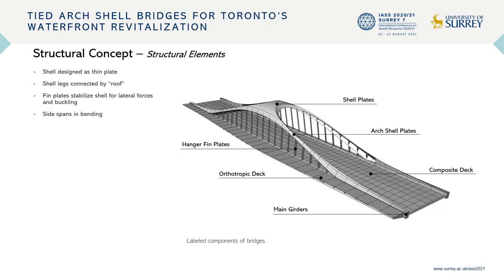Here you see the elements of the bridge. As mentioned, you have the shell itself in compression, with the two sides linked together at the top to also reduce the buckling length. Then you have hanging fin plates, which not only suspend the deck from the shell but also provide lateral stiffness and resistance to local buckling. The deck is made out of steel cross beams and a concrete deck, whereas the sidewalks have an orthotropic deck to reduce the overall weight of the bridge.